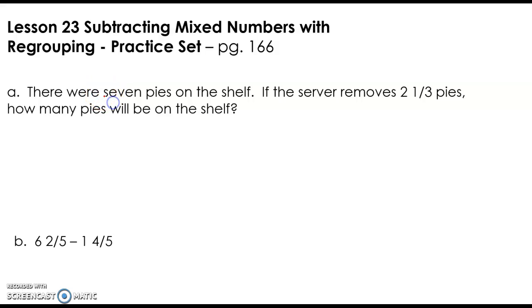For problem A, there were seven pies on a shelf. If the server removes 2⅓ pies, how many pies will be left? So I have 7 - 2⅓. Now I can't subtract 2⅓ from nothing, so I'm going to borrow one. When I borrow one, this becomes 6, but it needs to be in a form that I can subtract from. So I'm going to borrow ³⁄₃ because it has the same denominator. Is 6³⁄₃ equal to 7? Yes, absolutely. So let's subtract: 3 - 1 = ⅔, and 6 - 2 = 4.